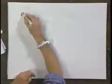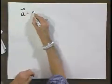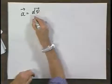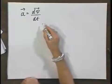What now is the instantaneous acceleration A? The instantaneous acceleration A is defined as the time derivative of the velocity.